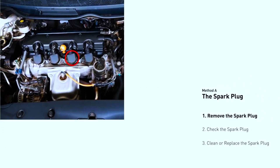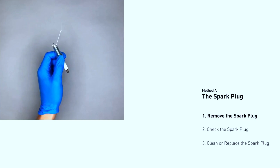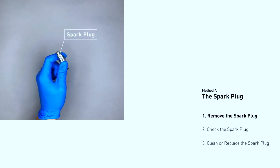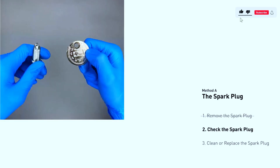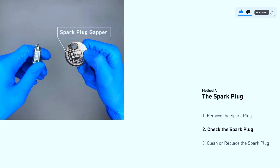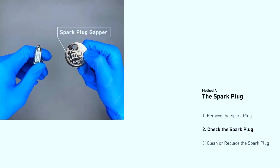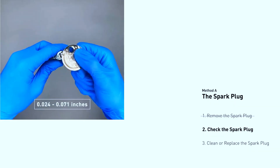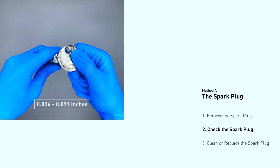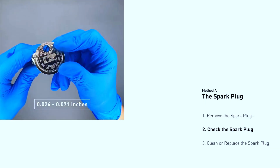Locate your spark plugs — they'll be screwed into the engine block, usually with wires or coil packs on top. Consult your manual for cylinder 5's location. Disconnect the battery for safety, then remove the spark plug wire or coil pack from cylinder 5. Use a spark plug wrench to remove the spark plug itself. Inspect it for cracks, excessive wear, or fouling (dark buildup). Gap the spark plug if necessary using a gapping tool, referring to your manual for the correct gap. Replace the spark plug with a new one following the manufacturer's recommendations. Repeat these steps for all spark plugs — it's best to replace them all at once since they wear together.